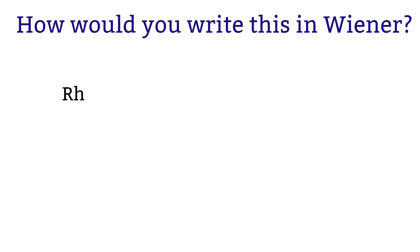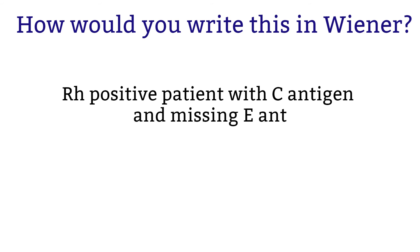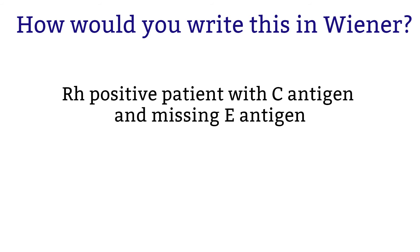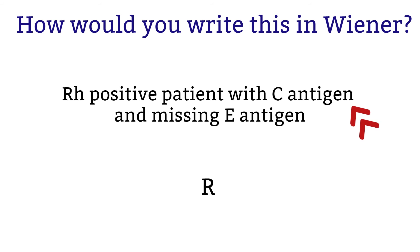Now let's work on an example. An RH positive patient with C antigen and missing E antigen — how would you write that in Wiener? The patient is RH positive, which means we will write an uppercase R. Next, the patient has C antigen, and C antigen is associated with number one. So when we put that together, we will have uppercase R with subscript number one.